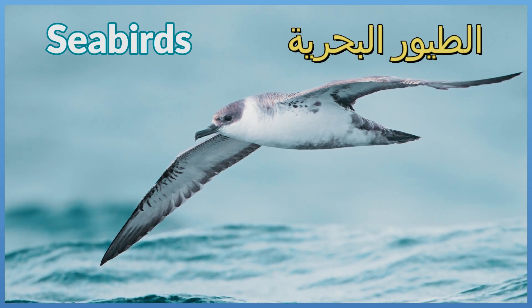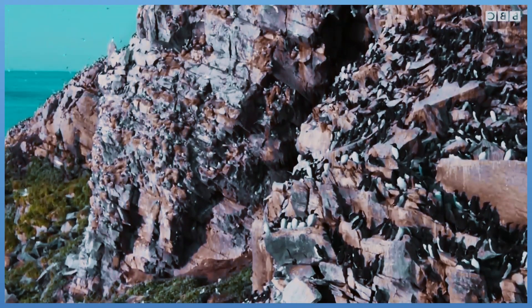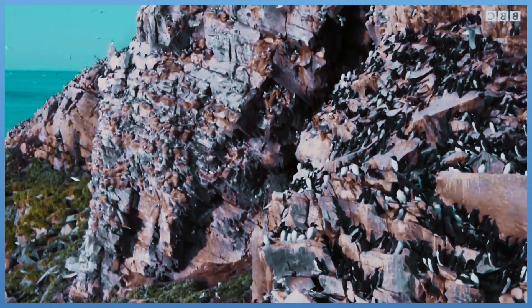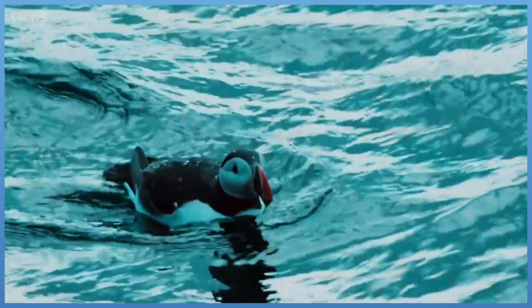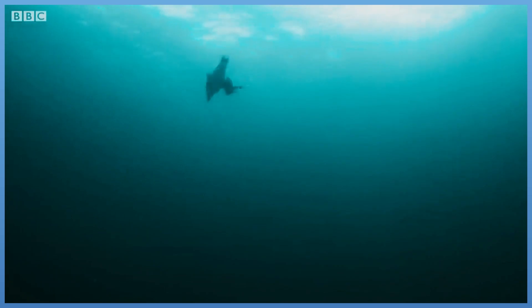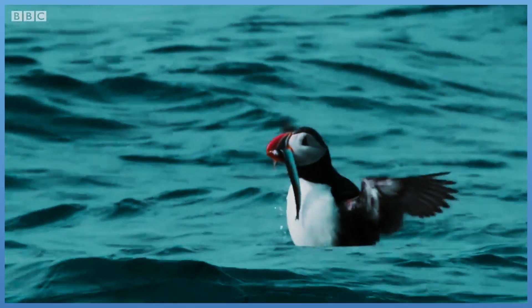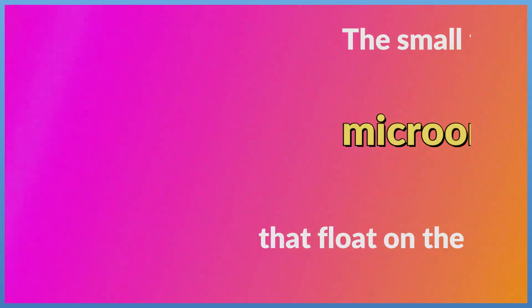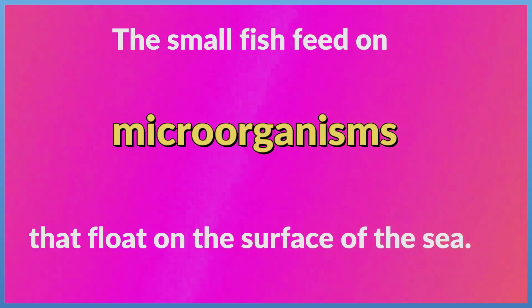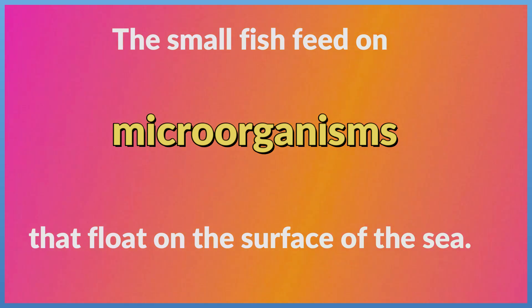Seabirds build their nests on the top of mountain cliffs. They dive deep down into the sea to feed on small fish, which are the main source of food for many seabirds. The small fish feed on microorganisms that float on the surface of the sea.